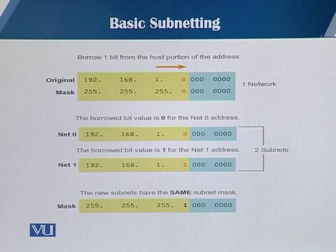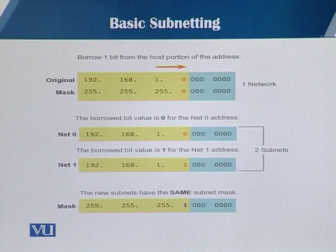Coming back to the slide, if I borrow one bit from the host portion of the address, it's going to give me two subnets, because one bit can have a value of zero or one. The new subnets are going to have the same subnet mask.